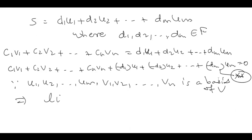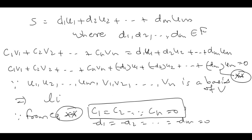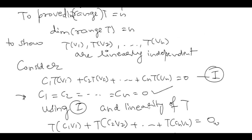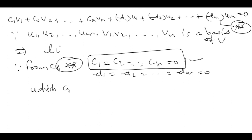Since the list is linearly independent (let me call this double star), from equation double star all my scalars should be zero. That is, c1, c2, ..., cn should all be zero, and -d1, -d2, ..., -dm equal zero, which implies di = 0 for every i. My interest lies in the scalars c1, ..., cn. I have shown these are all zero, which proves that T(v1), ..., T(vn) are linearly independent. Since they span and are linearly independent, the dimension of the range space is n. This completes the proof: dimension of V = dimension of the null space of T + dimension of the range space of T.